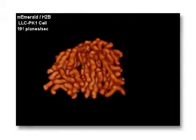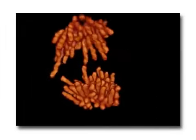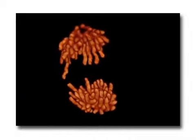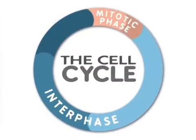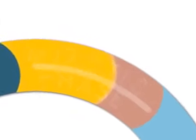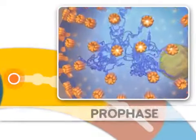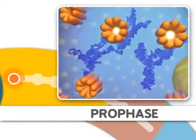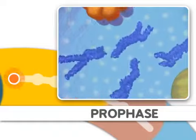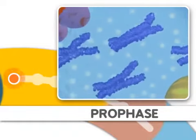Mitosis is the process of dividing the duplicated DNA of a cell into two new nuclei. Mitosis is split into distinct stages. The first stage is prophase, where the DNA condenses, organizes, and the classic chromosome structure appears.